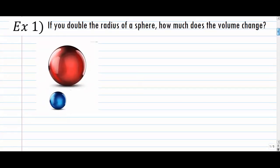Number one. Here we have a small blue sphere and a larger red sphere. The large red sphere has a radius that is twice as big. So if you double the radius of a sphere, how much does the volume change? There are a couple different ways to go about this problem — let me show you how to literally calculate two different volumes.